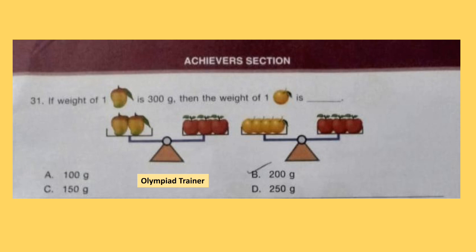Next is the Achiever section, question 31. If the weight of 1 mango is 300 grams, then the weight of 1 orange is? Two mangoes will be 600 grams. The first weighing scale shows 2 mangoes equal 3 apples, so 3 apples weigh 600 grams. The second weighing scale shows 3 apples equal 4 oranges, so 4 oranges also equal 600 grams. Therefore 1 orange weighs 150 grams. Option C is the answer.